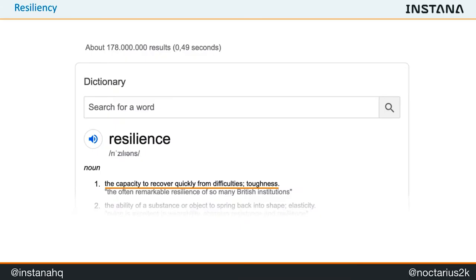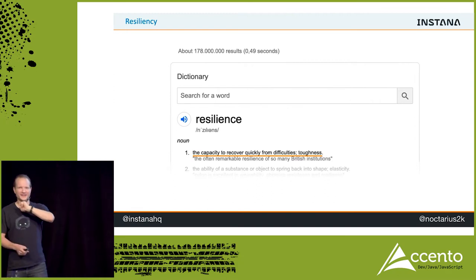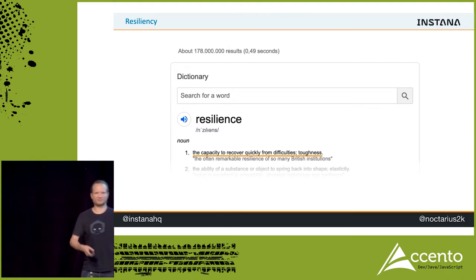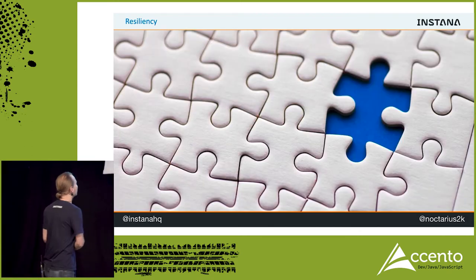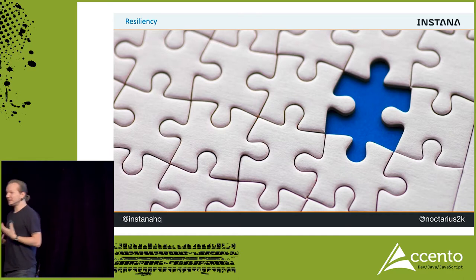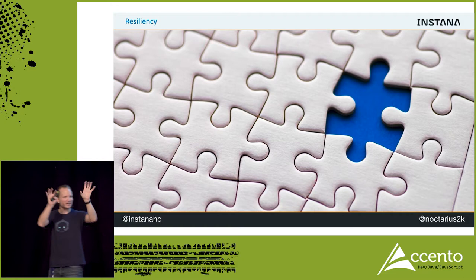Let's define resiliency first. I put it into Google and it gives you the answer right away: 170 million answers. There's this one simple sentence: 'The capacity to recover quickly from difficulties. Toughness.' So the capability to recover from problems, from unpleasant situations. When we build applications today, we often go back to these puzzle-based systems, frameworks - we're taking components and plugging them together.